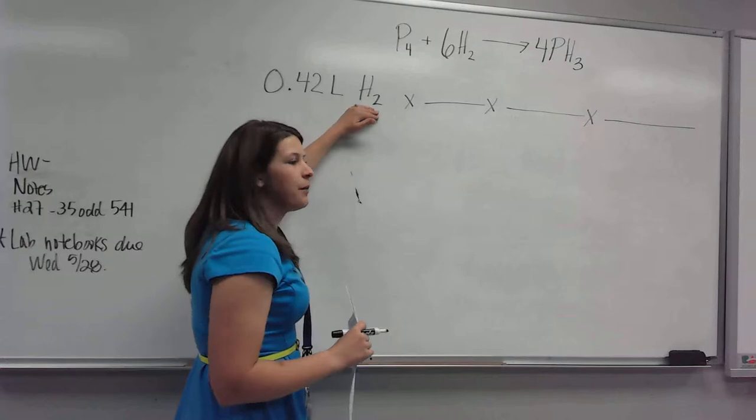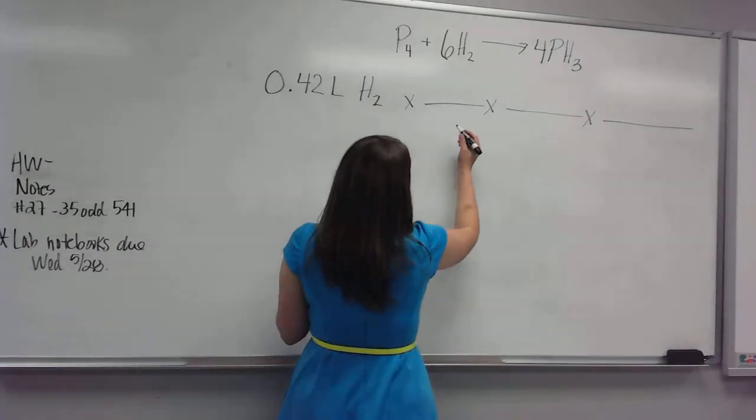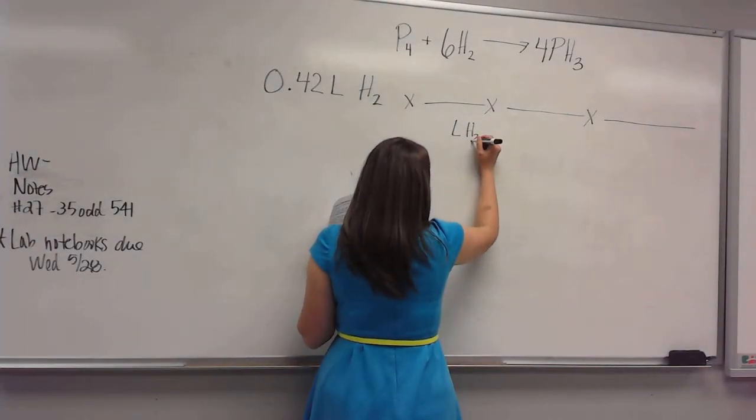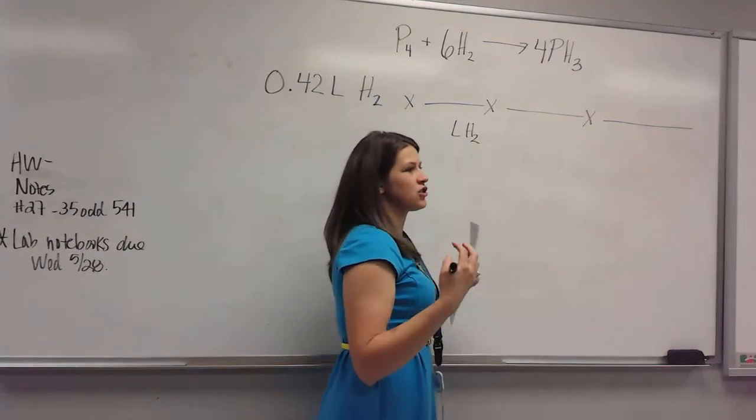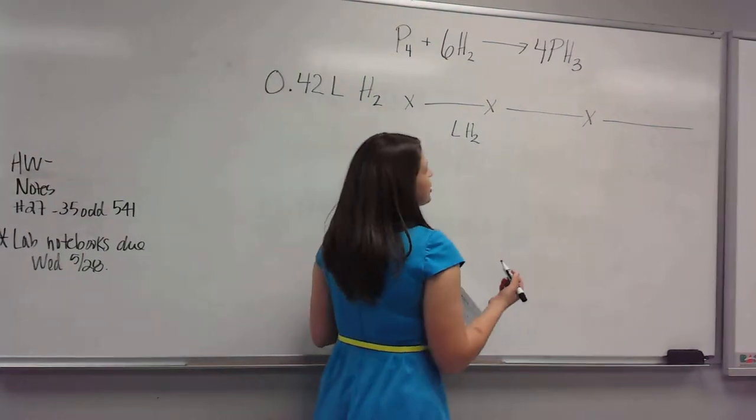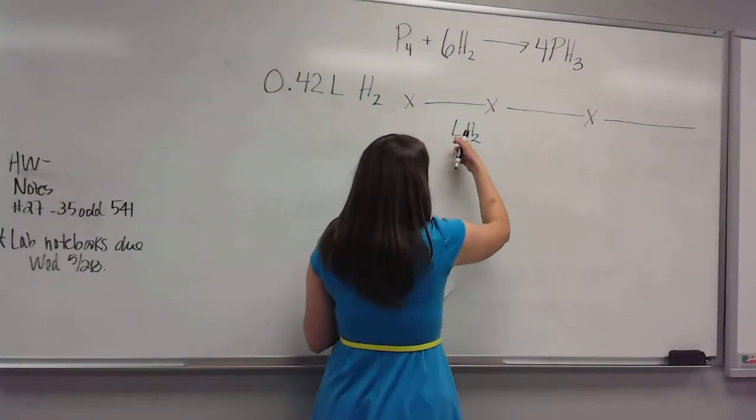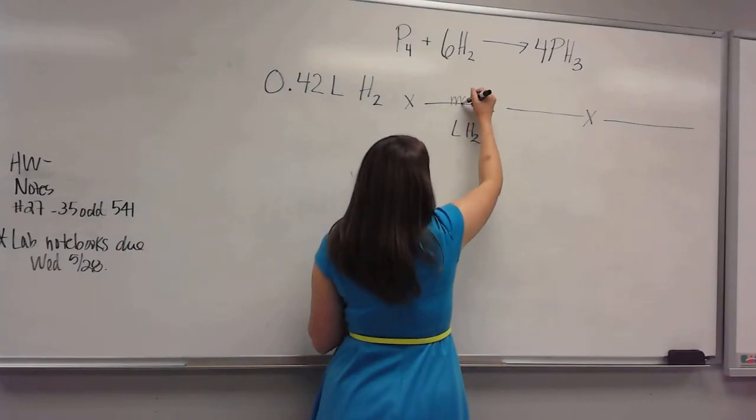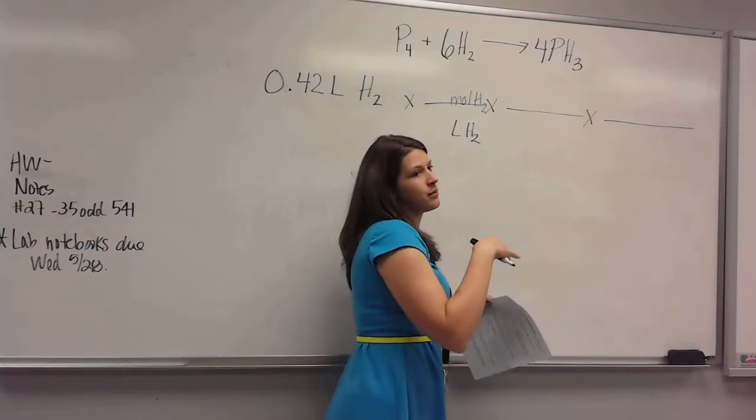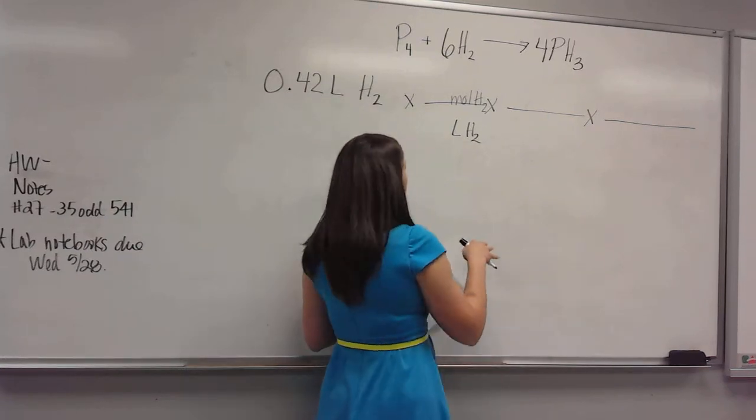Whatever unit you have on top is your unit that's going to go on bottom because you want them to cancel out. So liters of hydrogen. And then the key is just change everything to moles. And we can't change two things at once, so if we're changing liters to moles, then our hydrogen has to stay the same. Moles of hydrogen. I'm not going to put in numbers yet. I'm just going to work the units.